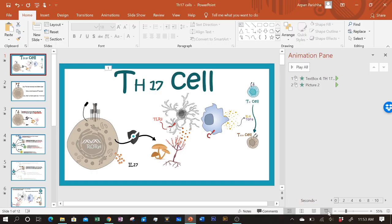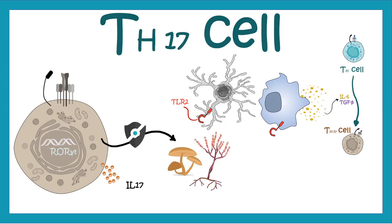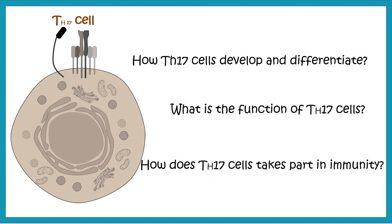Hi everyone. In this video we'll talk about TH17 cells. TH17 cell is one type of T helper cell, or rather a sub-population of T helper cells, which are heavily involved against fungal infection and are solely responsible for autoimmune disorders. In this video we'll talk about how TH17 cells develop and differentiate, what is the function of TH17 cells, and how TH17 cells take part in the immune response.